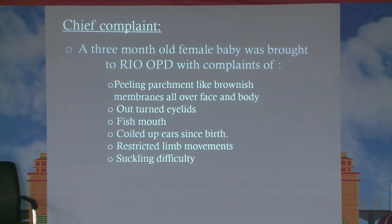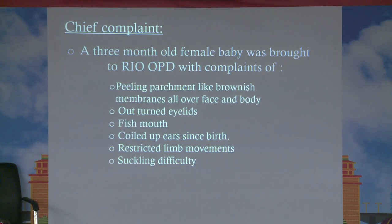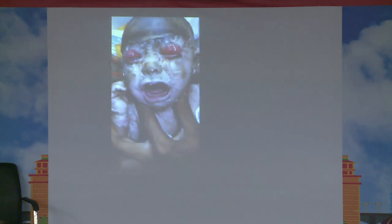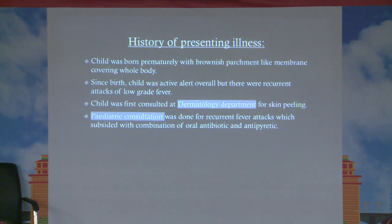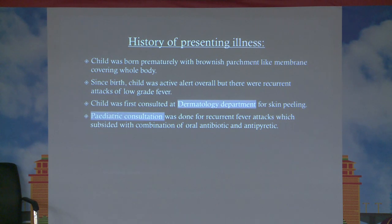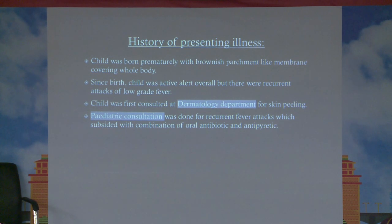I have no financial conflict of interest. A three-month-old female child was brought to the RIO OPD with complaints of peeling parchment-like brownish membranes over face and body, outturned eyelids, fish-like mouth, coiled-up ears since birth, with restricted limb movements and suckling difficulty. The child was born prematurely with brownish membranes since birth, was active and alert, however with recurrent attacks of low-grade fever. Dermatology and pediatric departments were consulted.